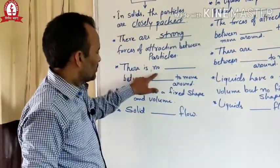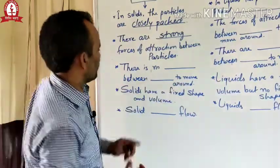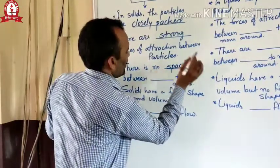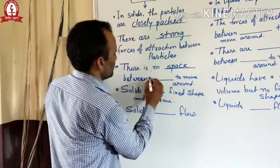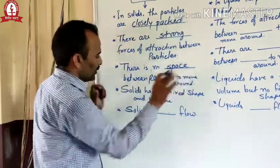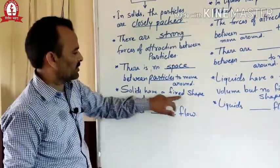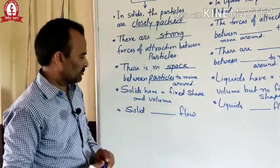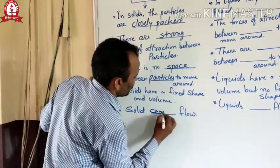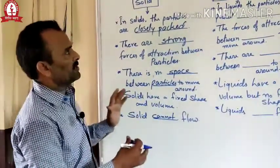There is no space between particles to move around. Solids have a fixed shape and volume. And last, solid cannot flow. These all are the properties of solids, which say the matter is solid.